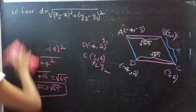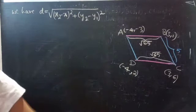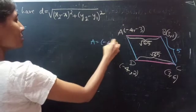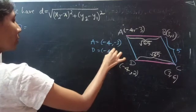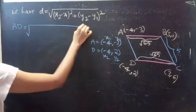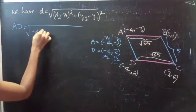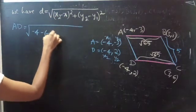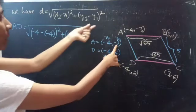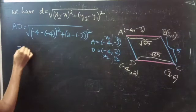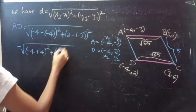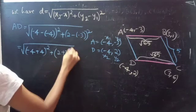Now we will find the distance AD. Having A equals minus 4 comma minus 3 and D equals minus 4 comma 2, let X1=minus 4, Y1=minus 3, X2=minus 4, Y2=2. This equals square root of (minus 4 minus minus 4) squared plus (2 minus minus 3) squared.